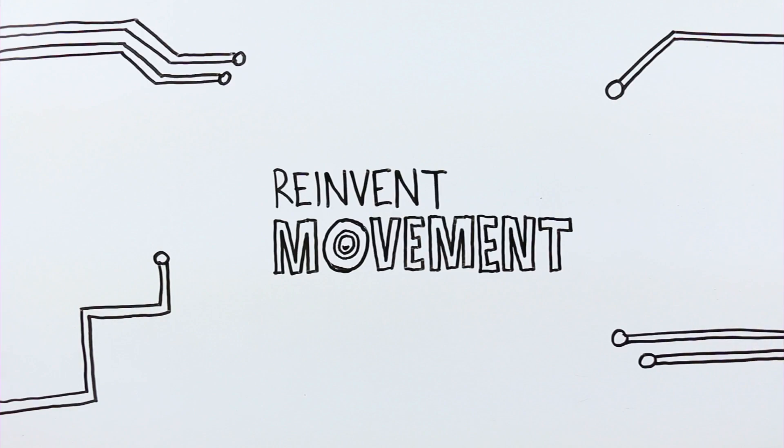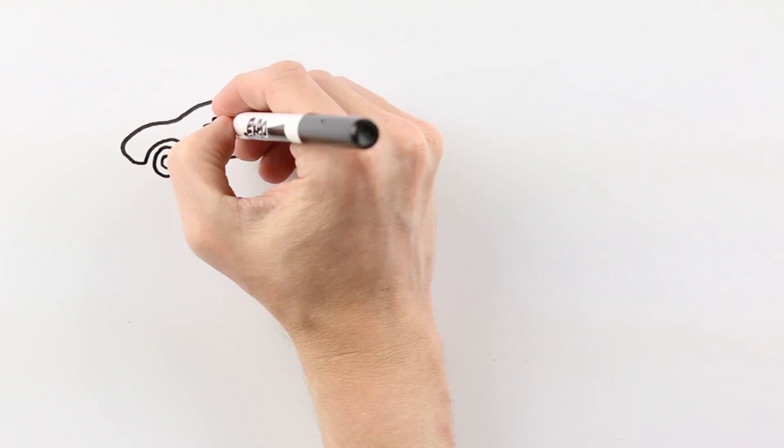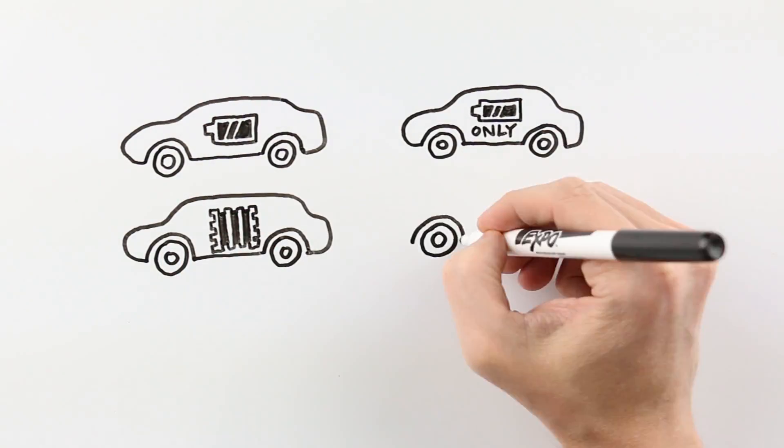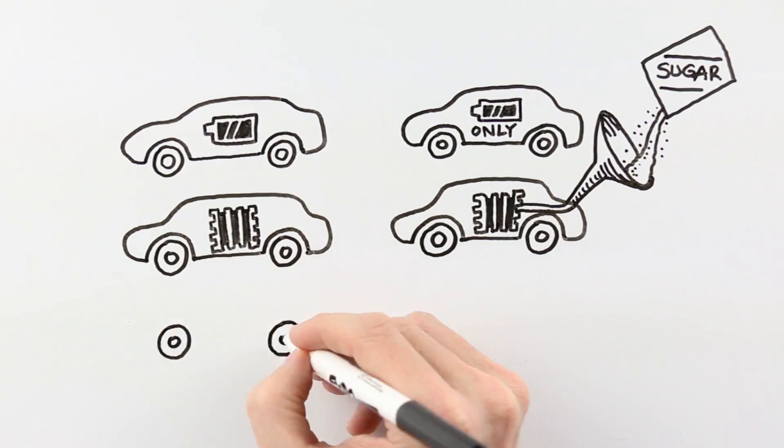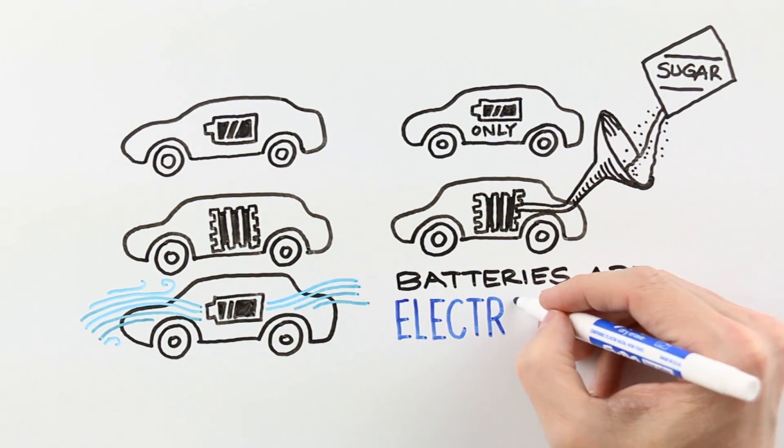Start with smart transportation. We're talking cars with batteries, cars that run only on batteries, cars with fuel cells, fuel cells that use sugar, batteries that use air. Batteries are electrochemistry.